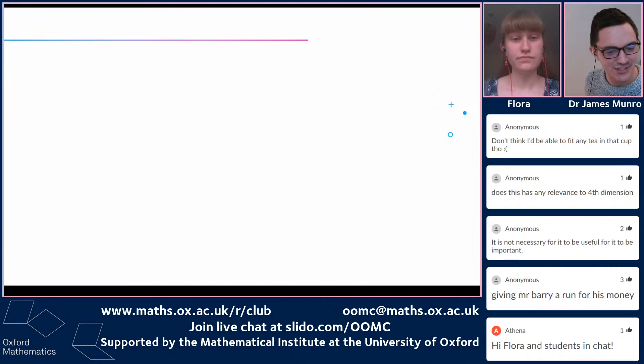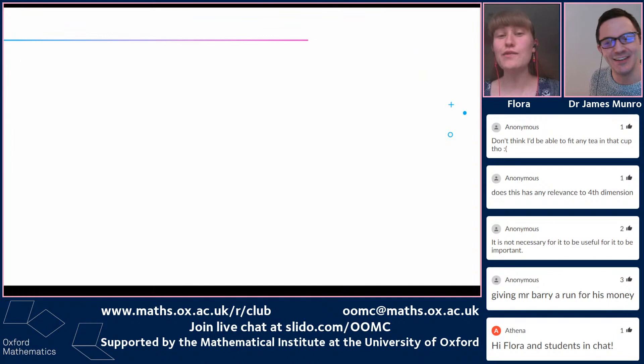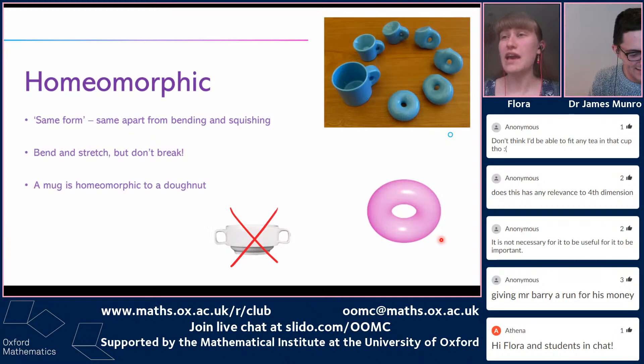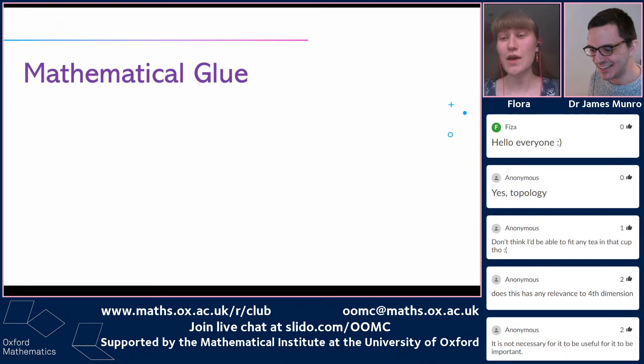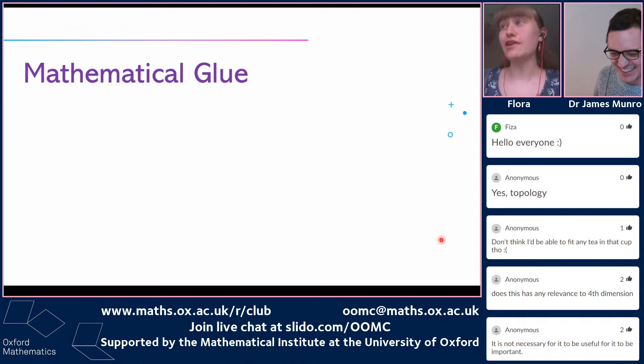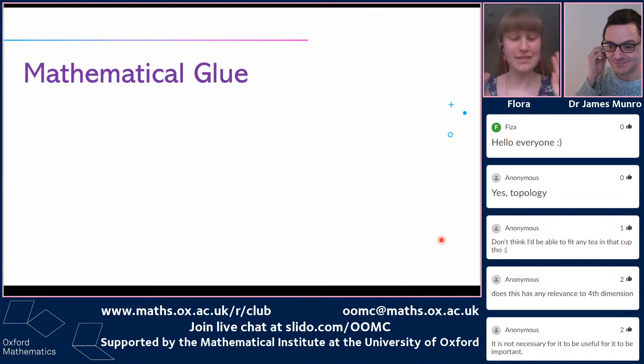There's some discussion in chat about whether you can fit tea into that mug as depicted. You can, only when it's in that form — if you're squishing it into a donut, the tea will indeed fall out. You can have something flat and homeomorphic to something that is definitely not flat, so holding liquid is not preserved under homeomorphism.